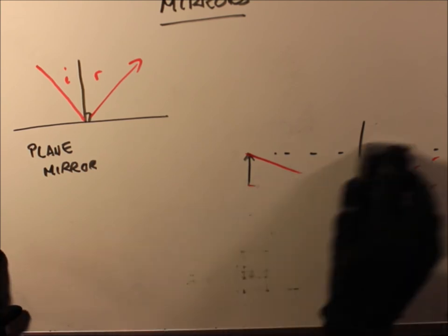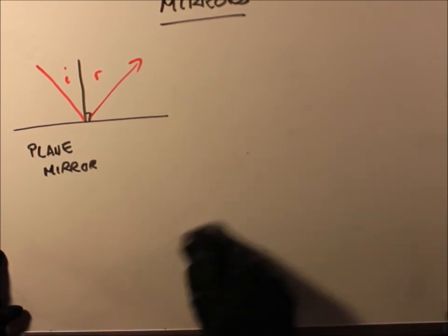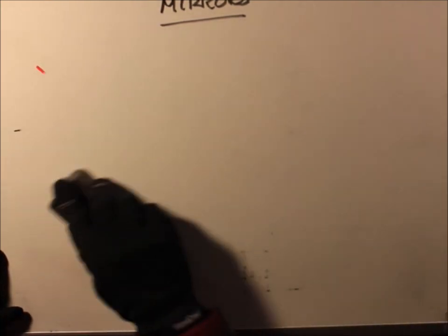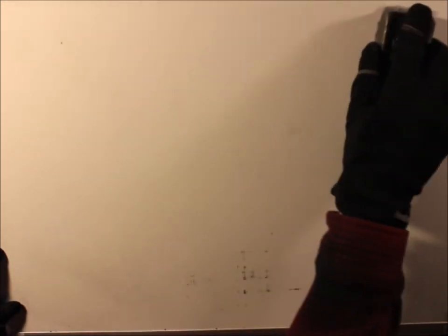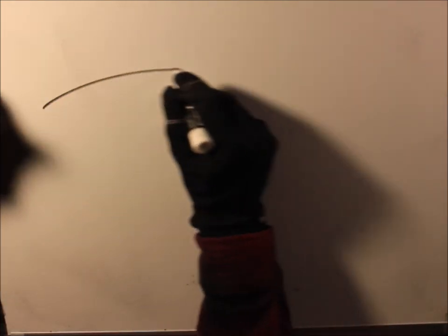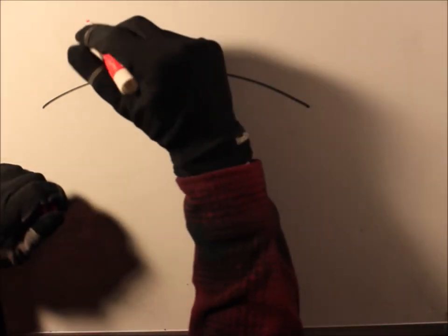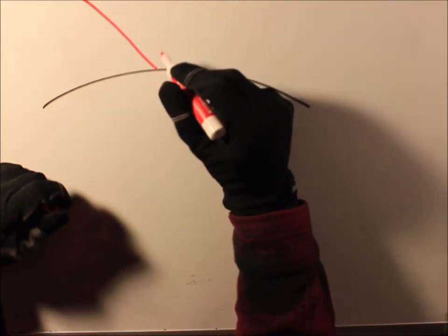Moving beyond flat mirrors: with a curved mirror, incident rays at different positions on the surface are reflected at different angles, producing focusing or diverging effects similar to those of lenses.